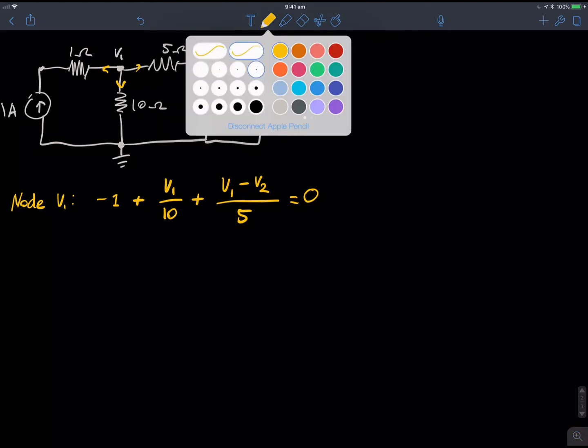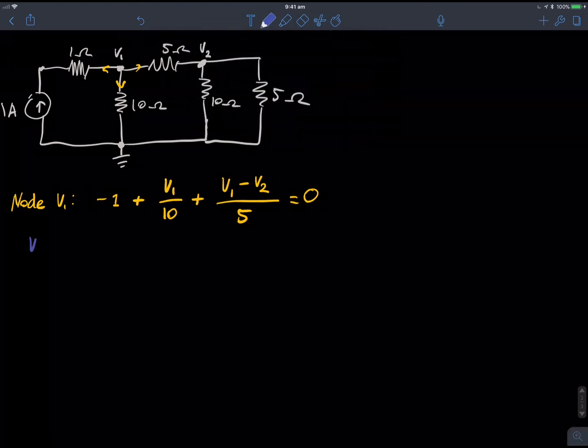And now for V2, I'll do it in blue. I'll do the current coming out here. It's going to be the negative of this current here. The current going to the left is going to be negative times that. And we can see it's V2 minus V1 on 5, because it's just the voltage of V2 minus the voltage of V1, which is the potential difference between those two points divided by the resistance. That's the current. The current coming downwards is V2 on 10 plus V2 on 5.